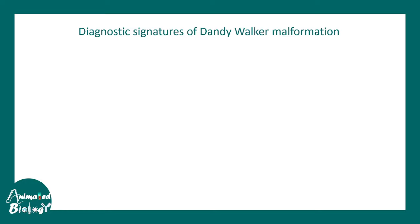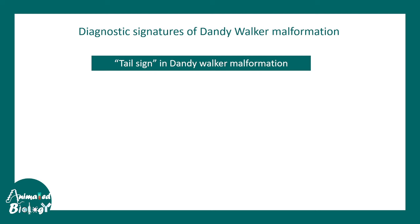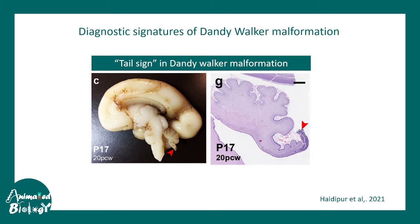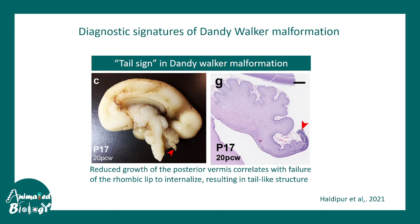The diagnostic signatures of Dandy Walker malformation include a feature known as the 'tail sign,' recently proposed based on current research. In a 20 post-coitus week embryo with Dandy Walker malformation, the posterior part of the cerebellum appears like a dog's tail — curved. About 75 percent of examined Dandy Walker patients show this tail sign. It appears due to reduced growth of the posterior vermis and correlates with the failure of the rhombic lip region to internalize during cerebellar development.